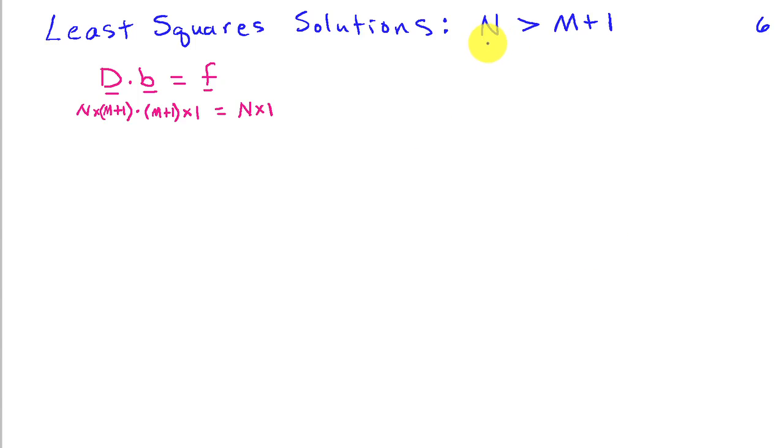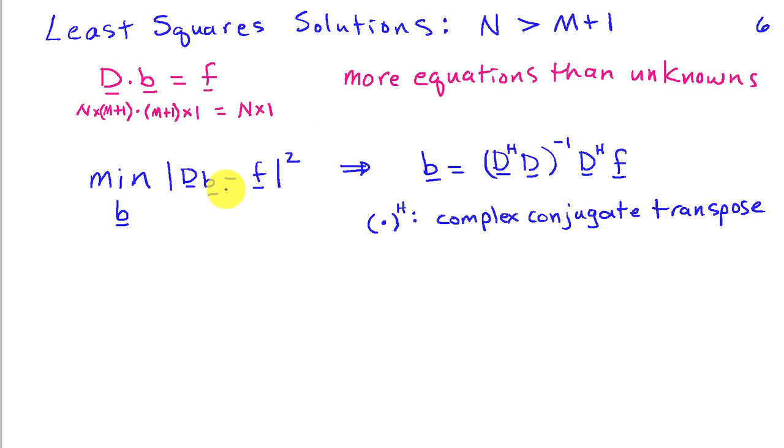Now what happens if we choose the number of constraints to exceed the number of degrees of freedom that we have in the FIR filter? Well, one can do this, and then we end up with a system of equations that we solve to get the FIR filter coefficients where we have N equations in M+1 unknowns. If N is greater than M+1, then it's no longer possible to satisfy this system of equations exactly in general. But we can try to find the coefficients that minimize the squared error between our filter response and the desired response. If you do this, you end up with a least squares solution that takes this form here where I have D complex conjugate transpose (that's what the superscript H means) times D, quantity inverse, times D complex conjugate transpose f, and that will give us our FIR filter coefficients.